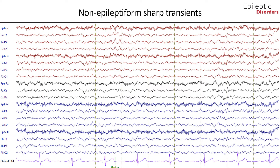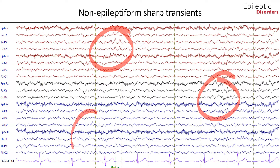In this bipolar montage, we will look at non-epileptiform sharp transients, also known as spiky fluctuation of the background activity. You can see sharply contoured waveforms consistent throughout the recording, as outlined in red in the temporal and parietal regions, as well as the midline channels and the right parietal regions.